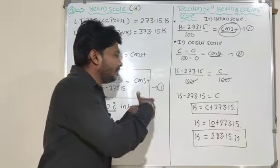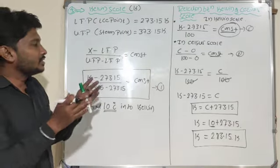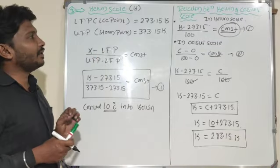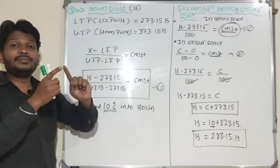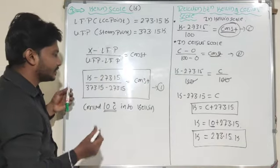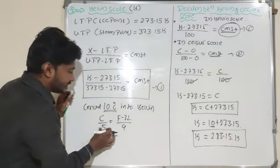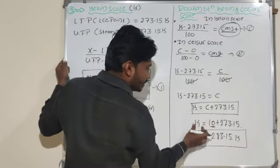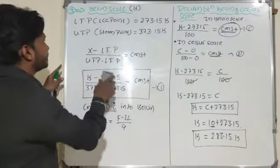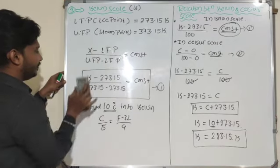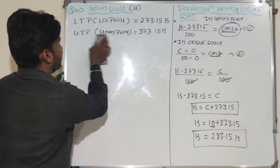For example, convert 10 degrees Celsius into Kelvin. Using K equals C plus 273.15, we substitute C equals 10, giving K equals 273.15 plus 10, which equals 283.15 Kelvin. That is the answer. We can similarly convert Kelvin back to Celsius.